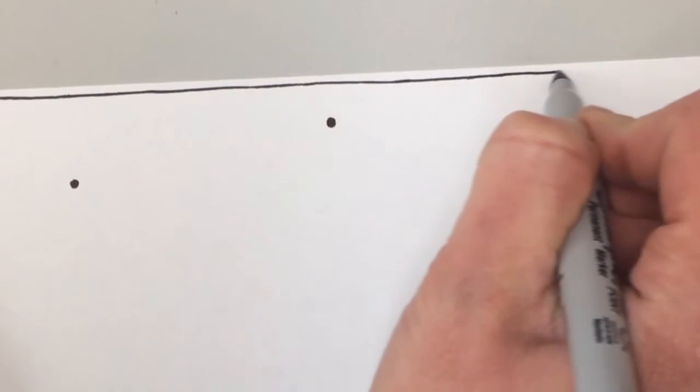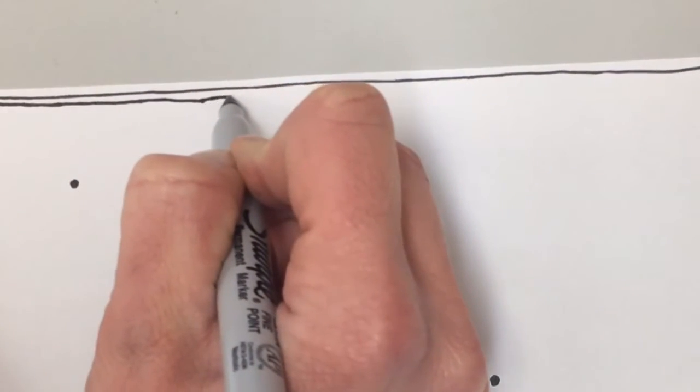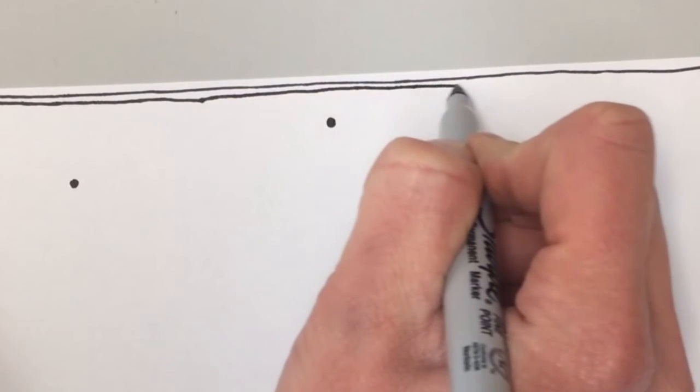Then, we're going to start by freehand drawing horizontal straight lines all the way across your paper. Now, it's fine if your hand makes a few waves or gets a little wobbly. It actually will add to the effect if you allow those little waves within your project.